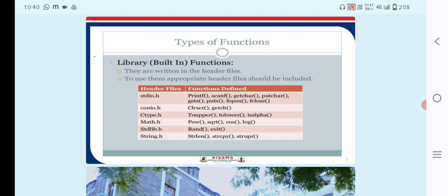Second is conio.h where clrscr and getch are the functions. Then ctype.h includes toupper, tolower and isalpha. Then math.h includes pow, sqrt, cos and log.